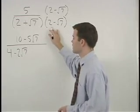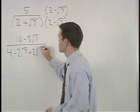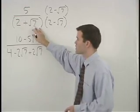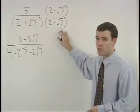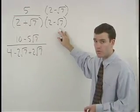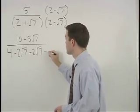Positive root 7 times 2 is positive 2 root 7. And positive root 7 times negative root 7 is negative root 49 or negative 7.